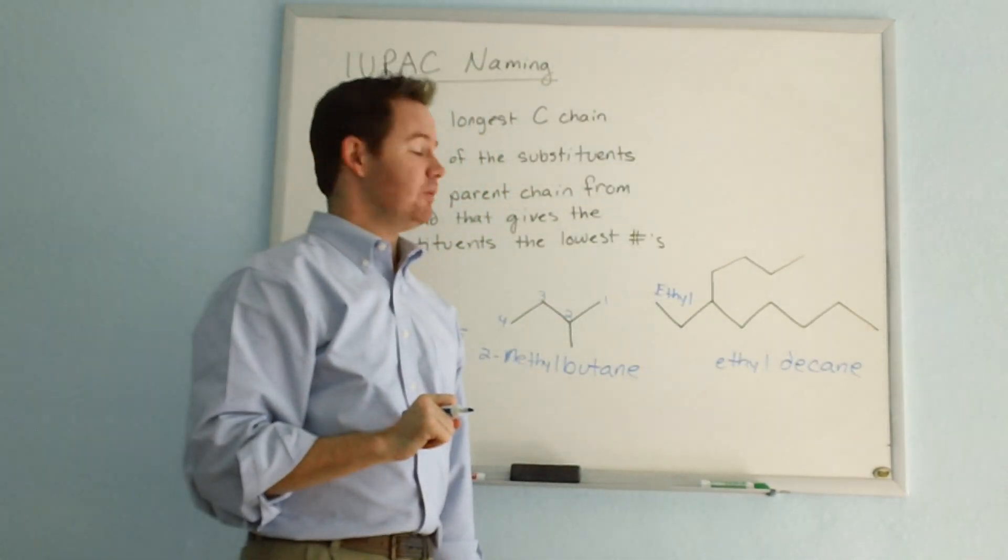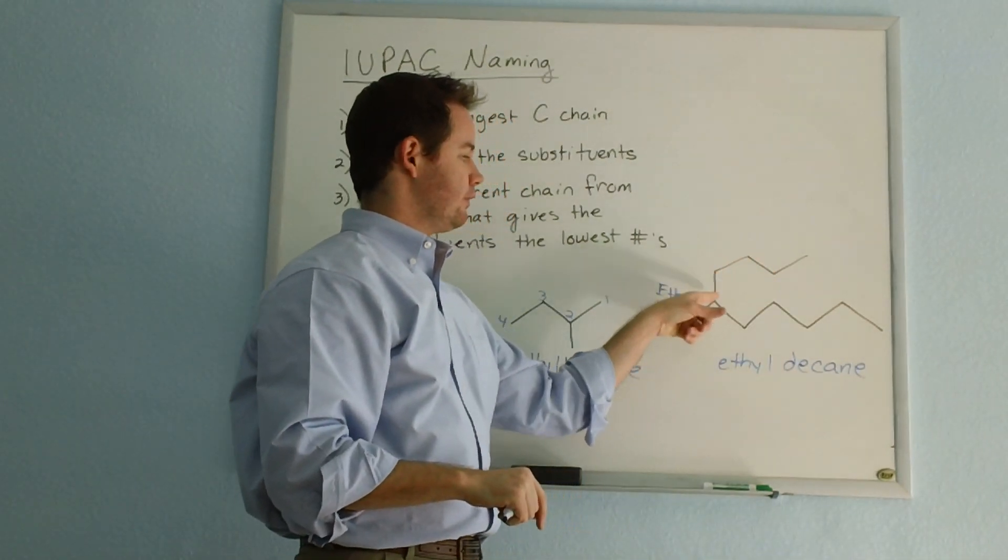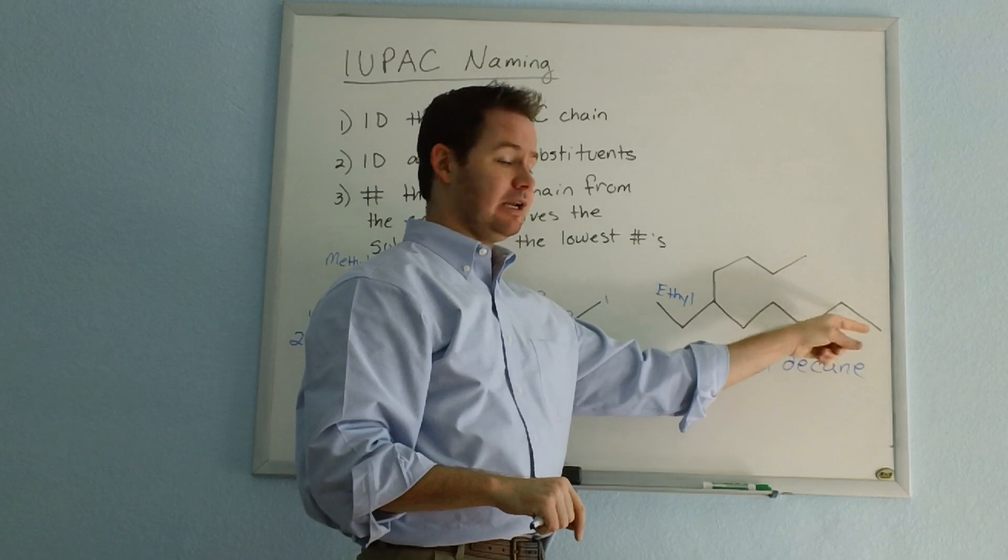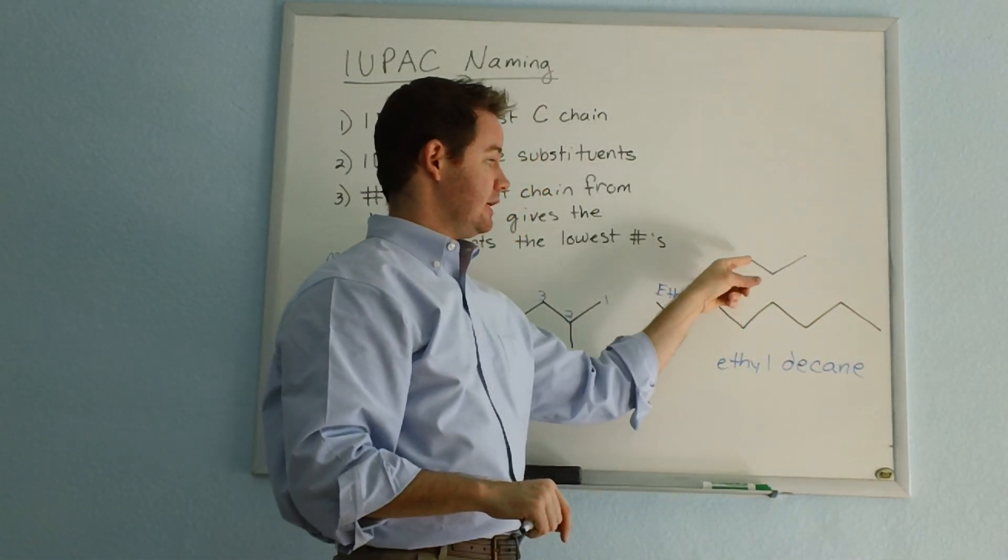And now for the numbering, we have to decide which end we're going to number from. One, two, three, four, five, six, seven, eight, nine, ten. Or one, two, three, four, five, six, seven, eight, nine, ten.